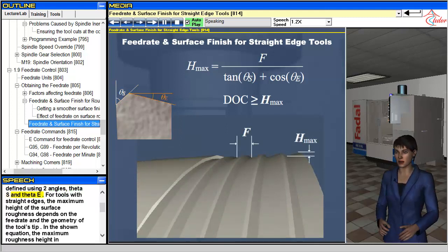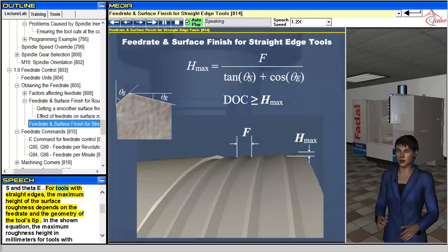Theta S and theta E. For tools with straight edges, the maximum height of the surface roughness depends on the feed rate and the geometry of the tool's tip.